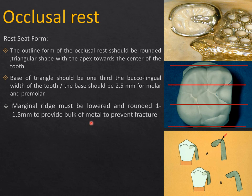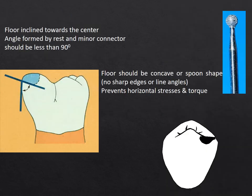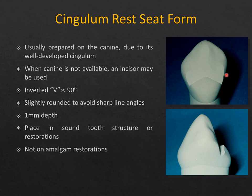Occlusal rests are placed on molars and premolars. The rest seat should be spoon-shaped or saucer-shaped, with its floor directed toward the center or long axis of the abutment tooth at an acute angle (less than 90 degrees) to prevent slippage of the cast partial denture. This design is especially important in Kennedy's Class 1 and Class 2 situations. The base of the triangular rest seat should be at least 2.5 mm or one-third of the tooth width. The marginal ridge should be lowered by at least 1.5 mm to provide bulk of metal — insufficient thickness in this area leads to frequent rest fracture. Edges of the rest seat are flared with a finishing bur and prepared with a round bur.